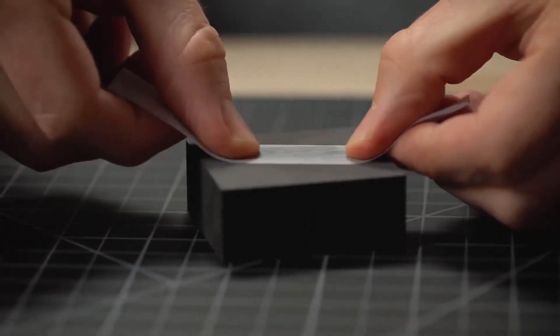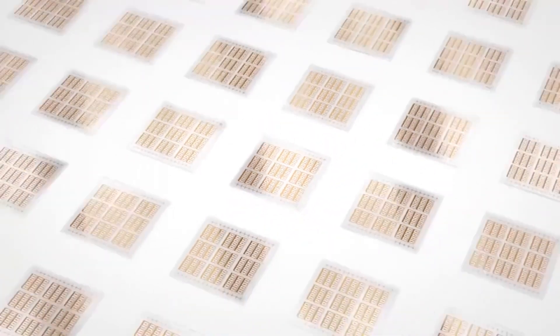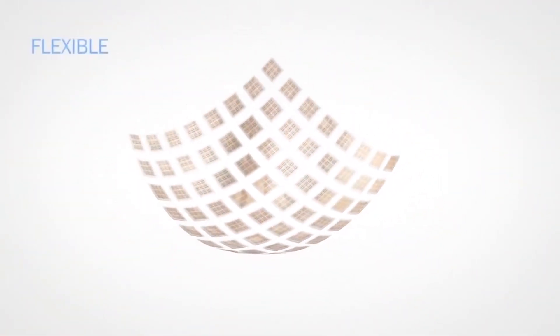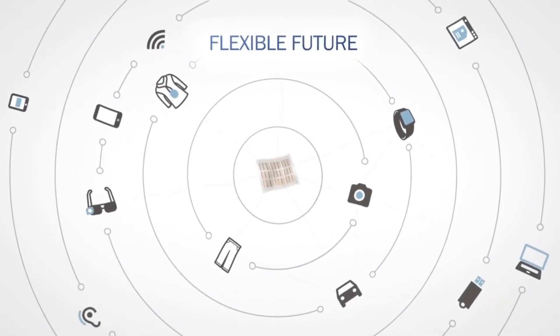The remarkable thing about boron is that it is a non-metallic semiconductor in 3D form. In 2D, however, it transforms into a metallic conductor.